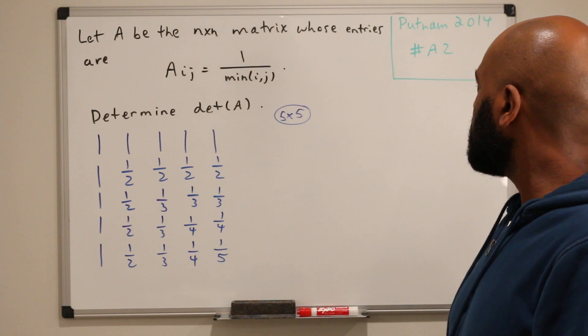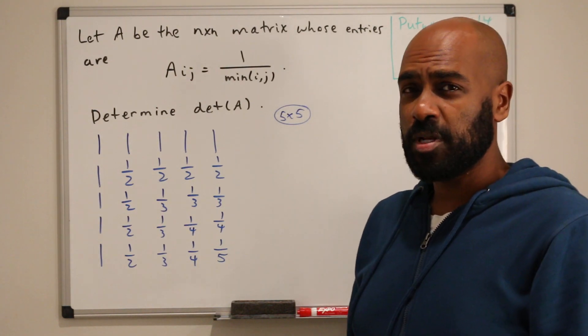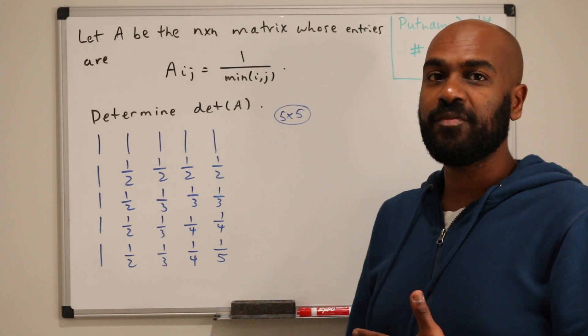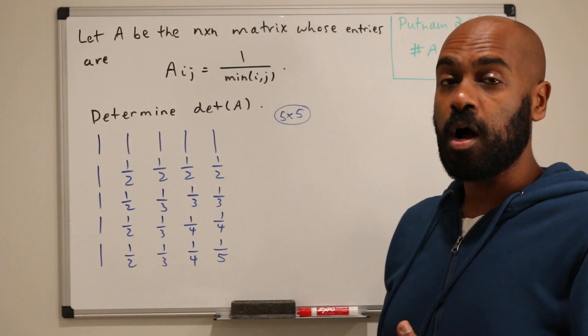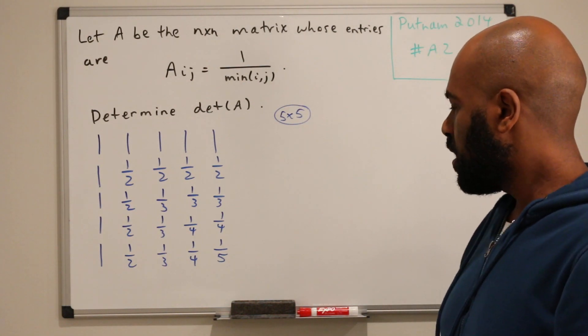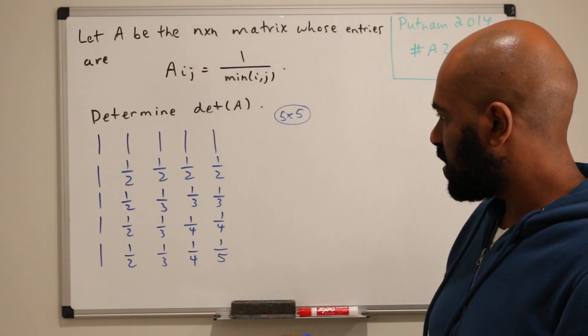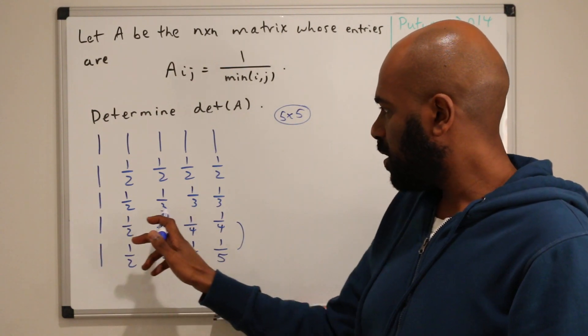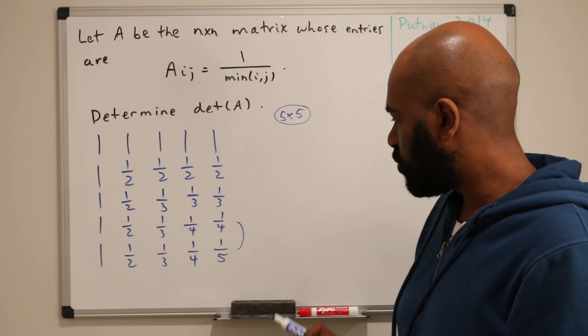A typical strategy in general with these Putnam determinant problems is looking for ways to simplify what you have by using row or column operations of some kind. One thing you might notice is that these two rows have a lot of entries that are similar, all of these entries here except for this last entry.